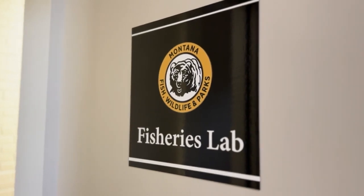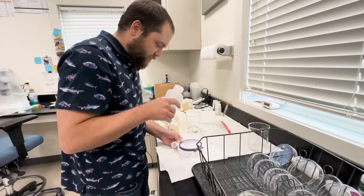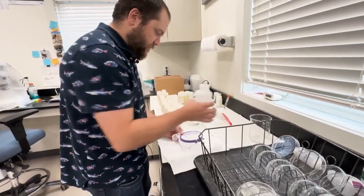A 63 micron net is drawn through the water column, and then that's all condensed into one piece.